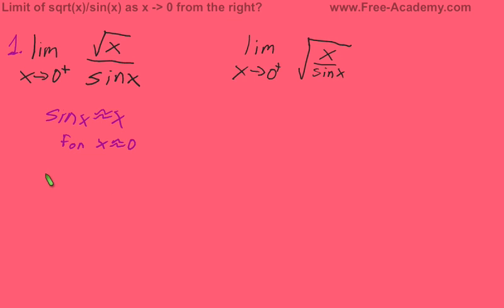Using this, we rewrite it as the limit as x approaches 0 from the positive side of the square root of x over x, which I'm going to rewrite as x to the 1/2 power divided by x to the 1 power.